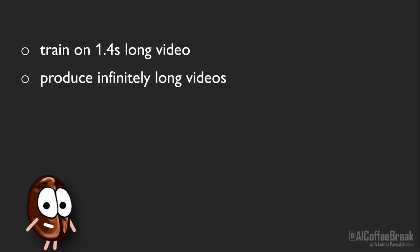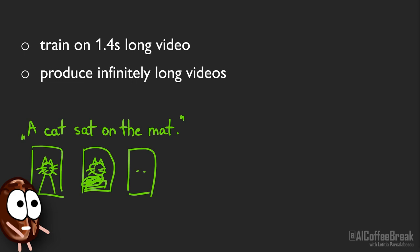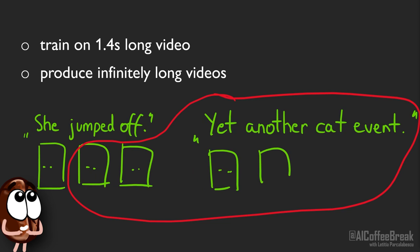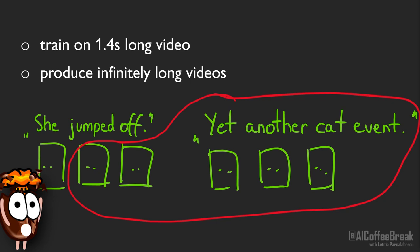By doing this many, many times, one can produce minute-long videos and even potentially infinitely long videos if we were to continue this iteration until infinity — and this, even if the model was trained on only short videos. But how? Let's get into more detail.